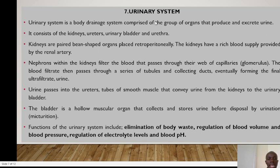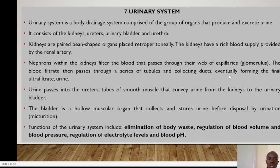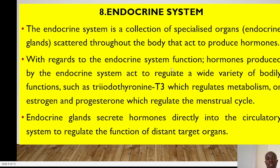The urinary system is involved in the production and excretion of urine. It consists of the kidneys, ureters, urinary bladder and urethra. It's important to note that kidneys are found behind the peritoneal cavity, which is why we refer to them as retroperitoneal. The functional unit of the kidneys are the nephrons, which filter blood through the glomerulus. The major functions are elimination of body waste, regulation of blood volume and blood pressure, and regulation of electrolyte and blood pH.